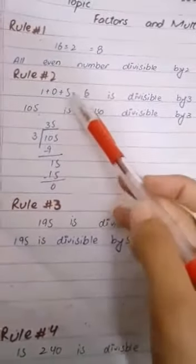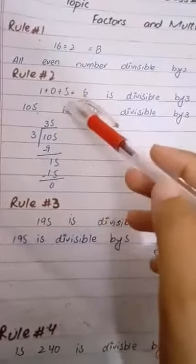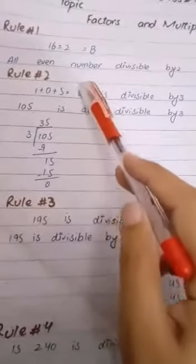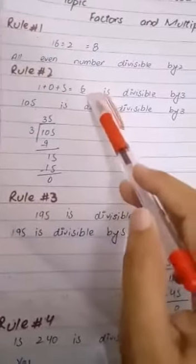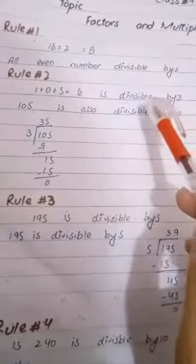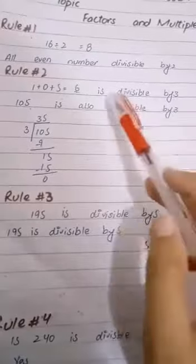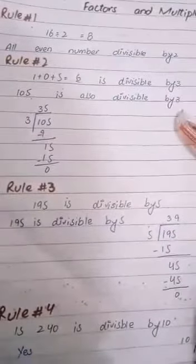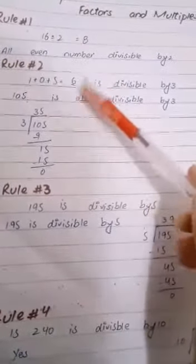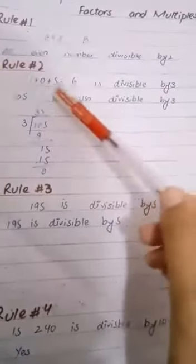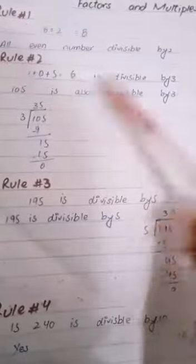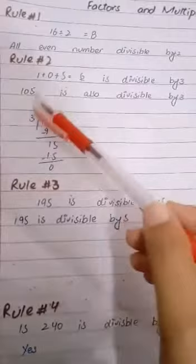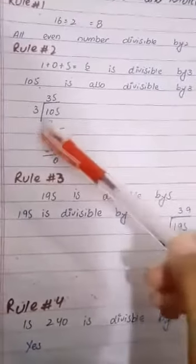For example, take the number 105. We add the digits: 1 plus 0 plus 5 equals 6. Since 6 is divisible by 3, the original number 105 is also divisible by 3. So 105 is divisible by 3.